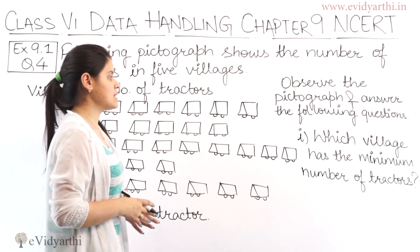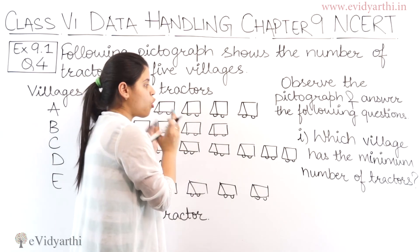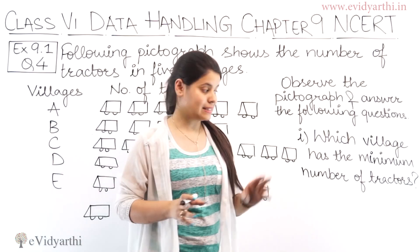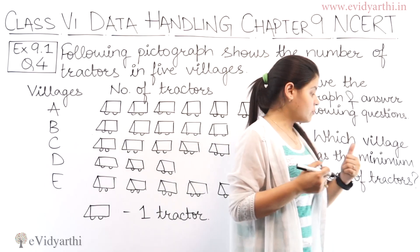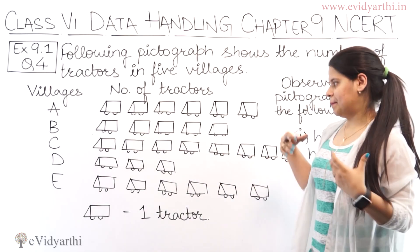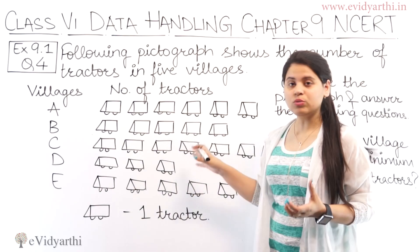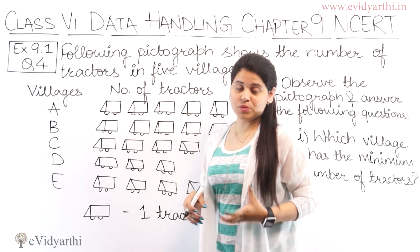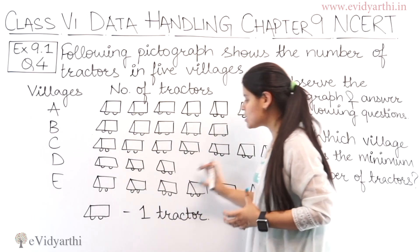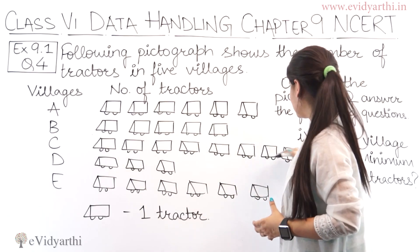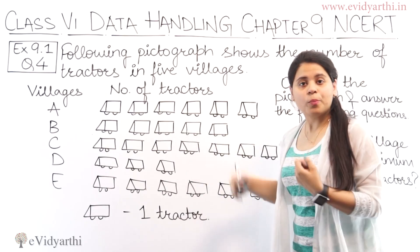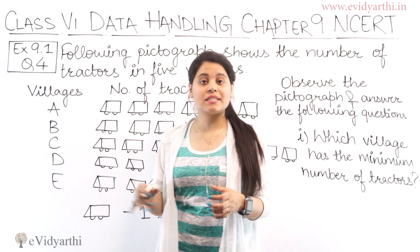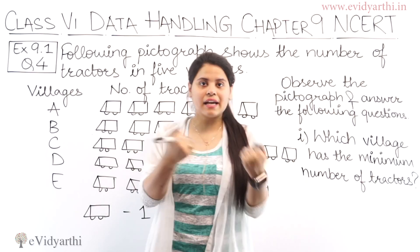Observe the pictograph and answer the following questions. When you observe it, you can count on your own. When you observe the pictures, you can see which villages have more tractors and which have less. So by looking at the pictures, you can understand where there are more and where there are fewer tractors.